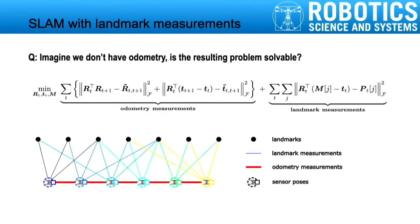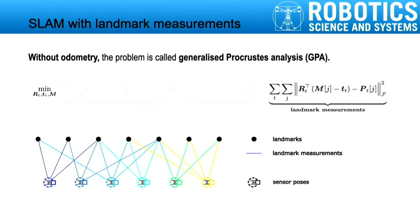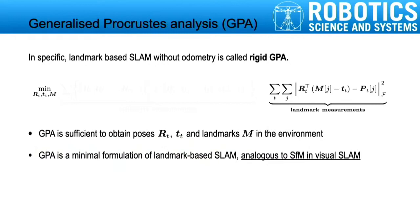Here is a typical SLAM problem. We have odometry and landmark measurements. Now, imagine we don't have odometry — that's the resulting problem to solve. Without odometry, this problem is called Generalized Procrustes Analysis, or GPA.